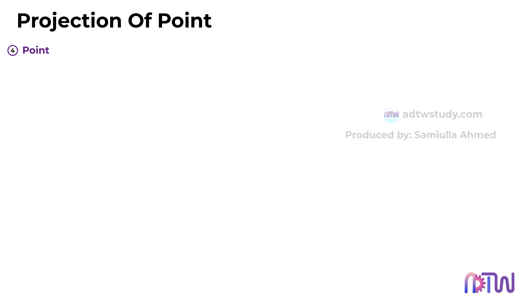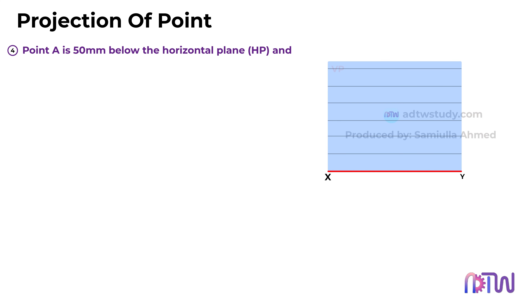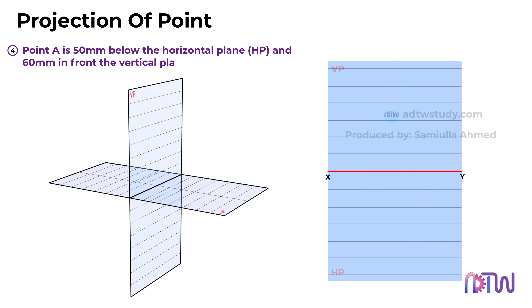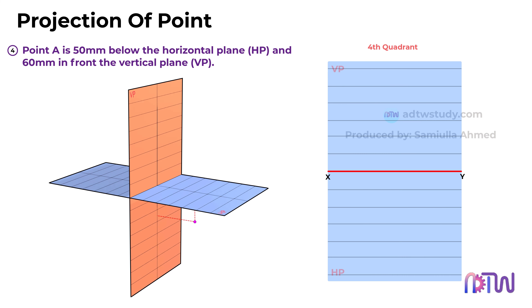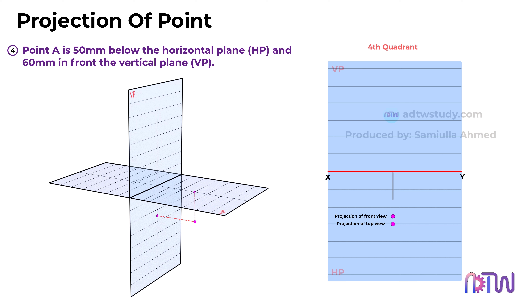Consider another example. Suppose point A is now 50mm below the HP and 60mm in front of the VP — this means the point is in the fourth quadrant. Placing the point below the HP and in front of the VP results in both the top view and front view being positioned below the xy-line. Both views align vertically, with the front view 50mm below the xy-line and the top view 60mm below the xy-line.